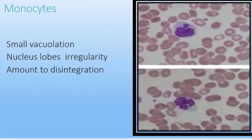In monocytes, we can observe marked changes. Small vacuoles appear in the cytoplasm, and the nucleus undergoes irregular lobulation which may almost amount to disintegration.